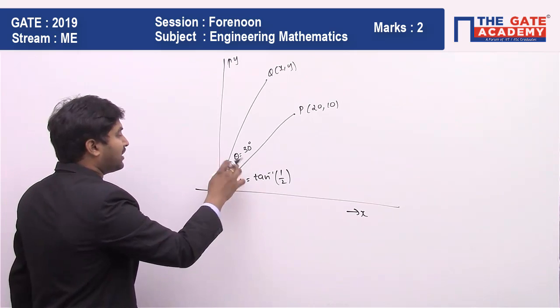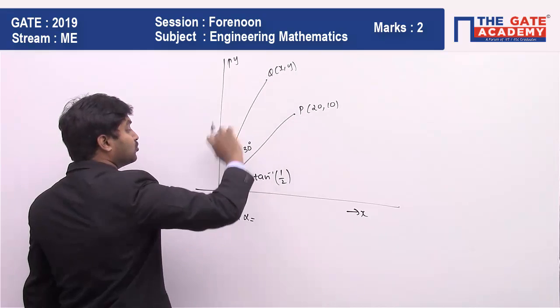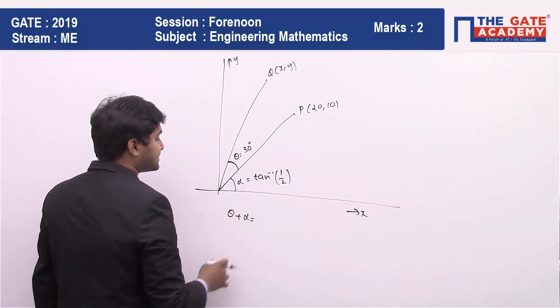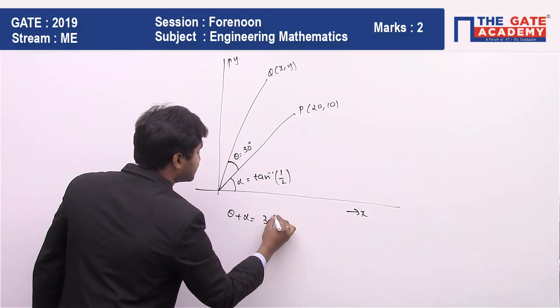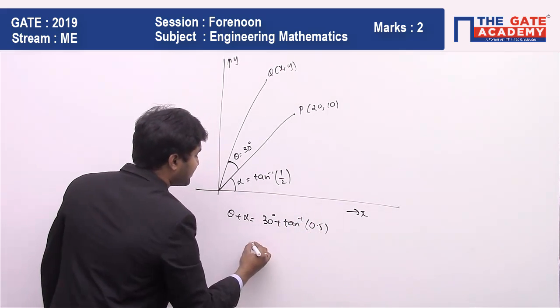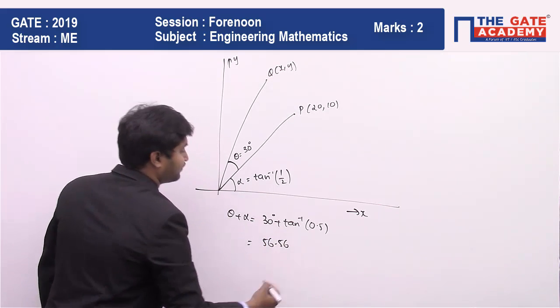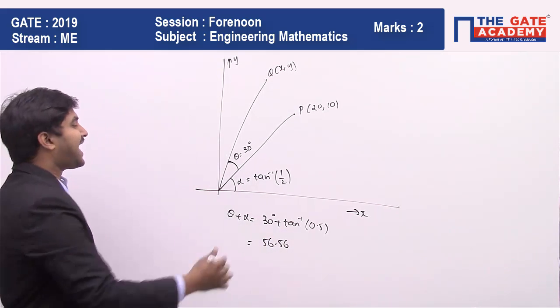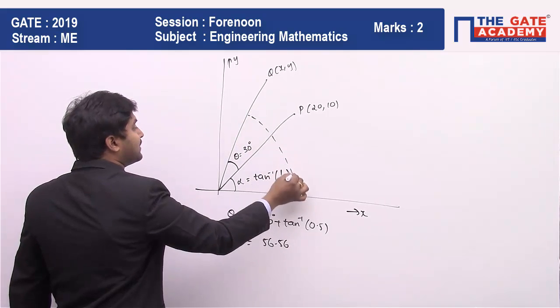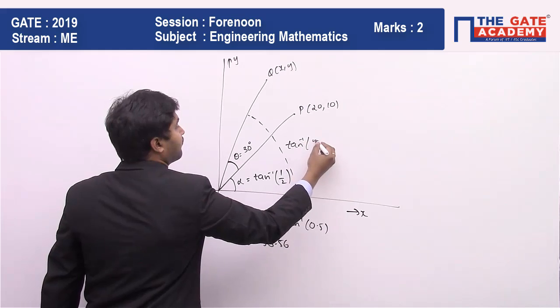Now the total angle that you are going to have, theta plus alpha, will be the angle that the point Q is going to make with the X axis, which is going to be 30 degrees plus tan inverse of 0.5, which comes out to be 56.56. Now this angle, the total angle, will be equal to tan inverse of Y by X.